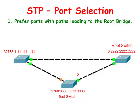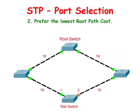If a network administrator wanted to make interface 2 the root port, he could modify the bridge priority on the right switch so that it is higher than the bridge priority on the left switch, thus making the right switch the root switch. In this example, the test switch had an equal cost to the root switch on both interfaces. Each Fast Ethernet link has a cost of 19, so 19 plus 19 equals 38 — both paths have a cost of 38.